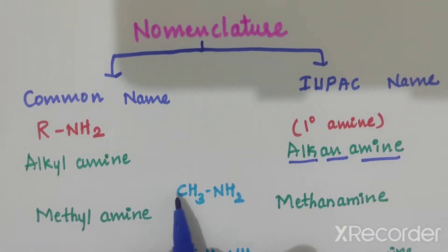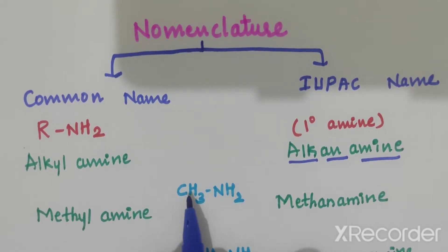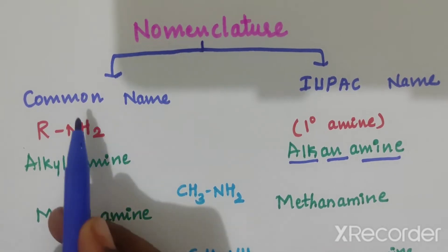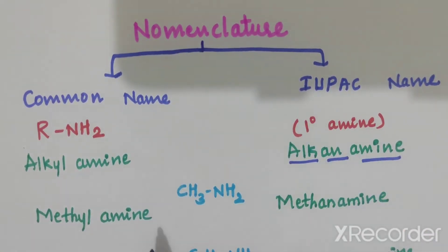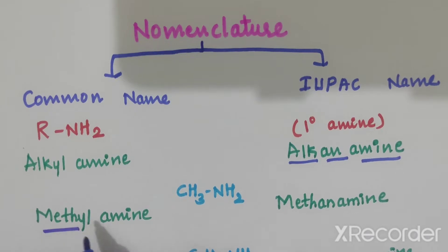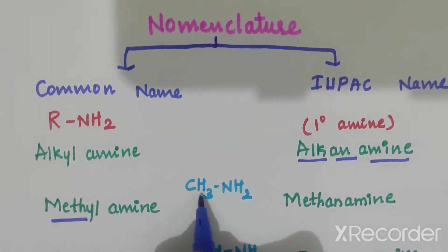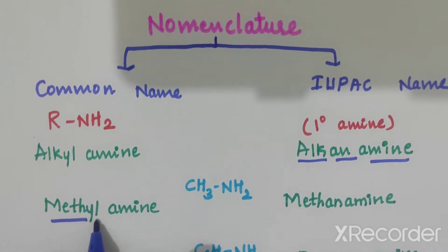If you consider the example CH3NH2, in common naming it is methyl amine. Methyl means this is a methyl group; hence methyl NH2 is amine. Here it is CH3, hence it is methyl amine. This is the common name.